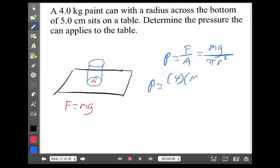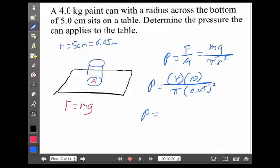So, mass of the paint can, 4 kilograms, gravity we'll use is 10, pi, the radius. Well, the radius is 5 centimeters, which if we convert, is 0.05 meters. And just that is squared. And we get 5,093 pascals.